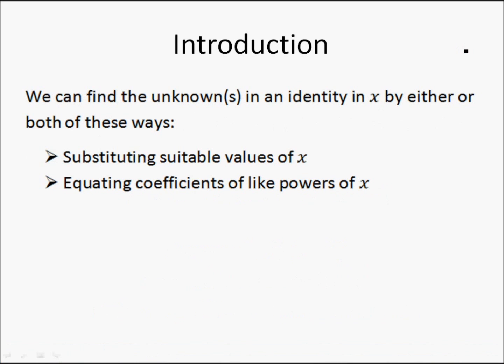Next, let's talk about how we can find the unknowns in a polynomial expression or identity. For example, if I let f(x) = ax² + bx + c, where a, b, and c are constants, or unknown constants, then our job will be to find out the values of a, b, and c.